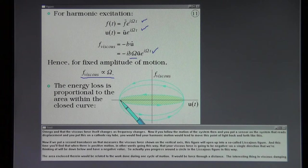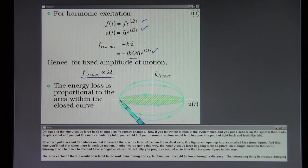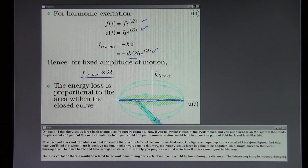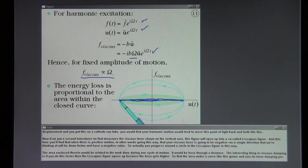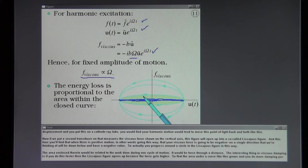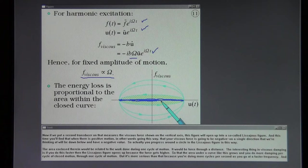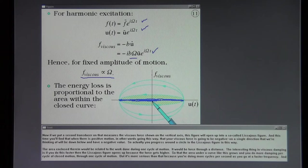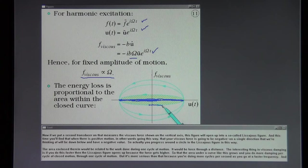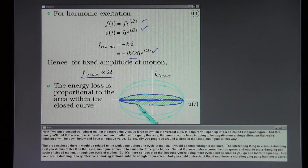Now if you follow the motion of the system then, and you put a sensor on the system that reads displacement, and you put this on a cathode ray tube, you would find your harmonic motion would tend to move this point of light back and forth like this. Now if we put a second transducer on that measures the viscous force shown on the vertical axis, this figure will open up into a so-called Lissajou figure. And this time you'll find that when there is positive motion, in other words going this way, that your viscous force is going to be negative in a single direction we're thinking of, will be down below and have a negative value. So actually you progress around a circle in the Lissajou figure in this way.